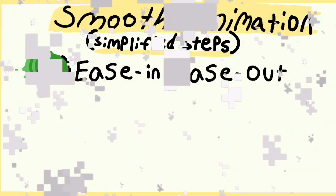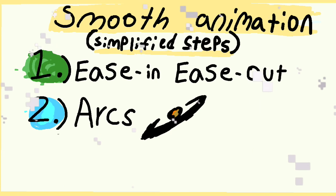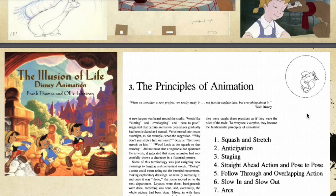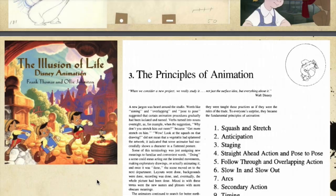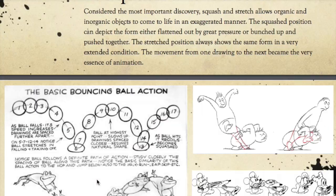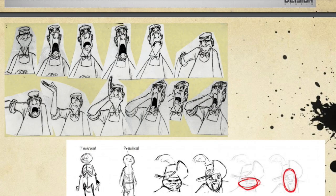Those are the three steps to getting smooth animation. These steps won't apply to every type of animation, but they're a good general rule of thumb. If you're more advanced and want to introduce smoothness into more complicated actions, I suggest checking out all of the principles of animation. Anyways, that's the tutorial — leave a comment if this helped you. Take care, bye.